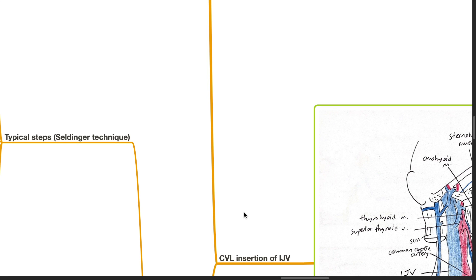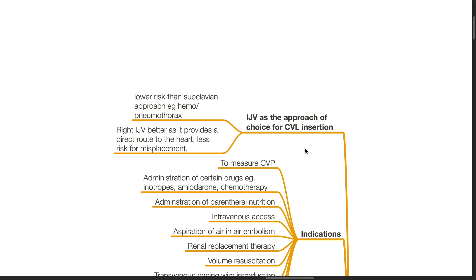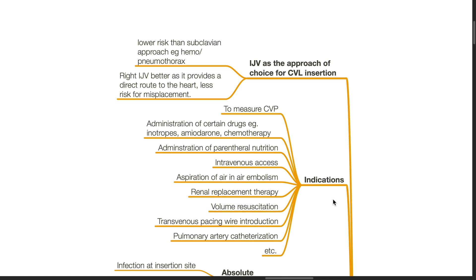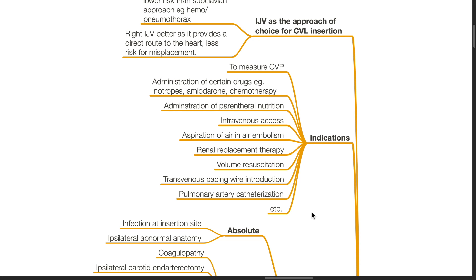Central venous line insertion for the internal jugular vein: the IJV is the approach of choice because it has lower risk than the subclavian approach, such as reduced risk of hemothorax or pneumothorax. The right IJV is better as it provides a direct route to the heart, resulting in less risk for misplacement. Indications for CVL insertion include measuring central venous pressure, administration of certain drugs such as inotropes, amiodarone and caustic drugs like chemotherapy, and parenteral nutrition.